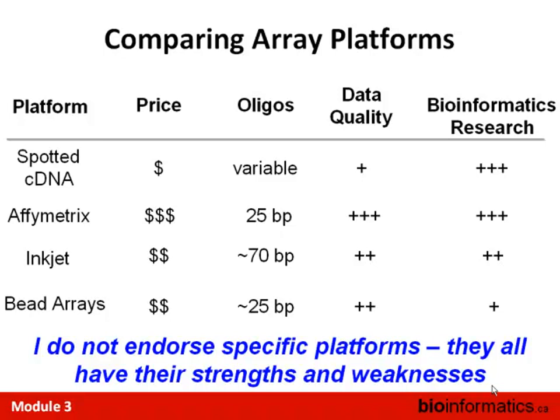Clearly the most research exists into spotted cDNA arrays — the oldest platform, which interested biostatisticians when they first came out. Affymetrix arrays also have tons of methodological work, which is one reason we're working through them in the practical session. Agilent arrays have a smaller amount but can use techniques developed for spotted cDNA arrays. Bead arrays, being more recent, have the least algorithmic development.